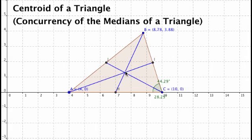The point at which all of these medians intersect is called the centroid. And the centroid has a lot of different properties.